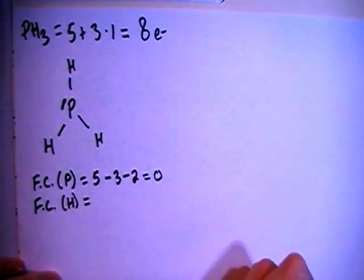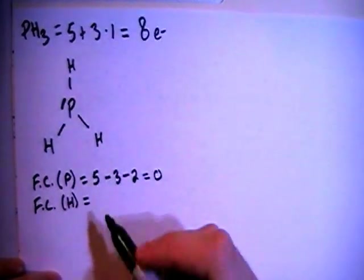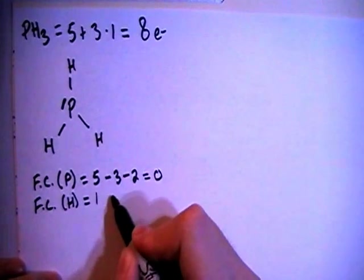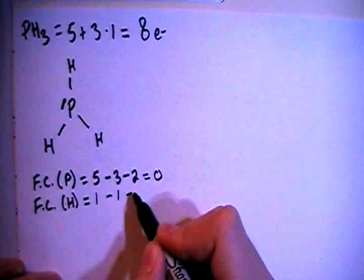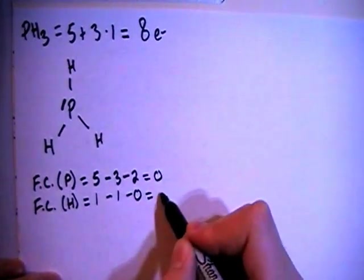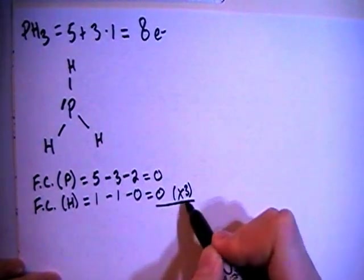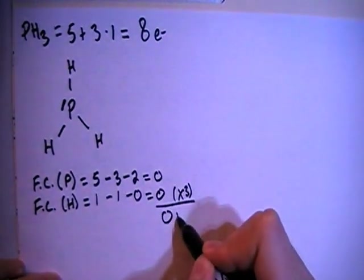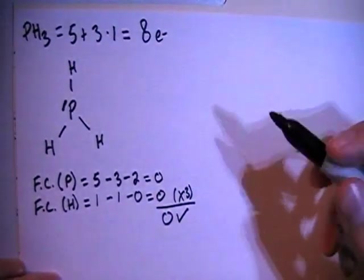And notice that they all have one single bond, so they're all the same setup, which means all of their formal charges will be equal. That equals 1 electron brought in minus 1 bond on each hydrogen minus 0 non-bonding for a formal charge of 0. Multiply that by 3 because there are 3 of them. Add this up, it still gives you 0 overall, which is what we need because this is not a charged compound.